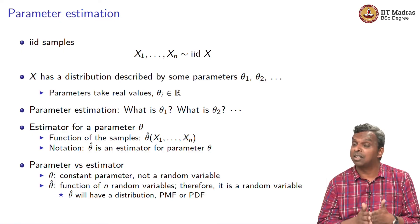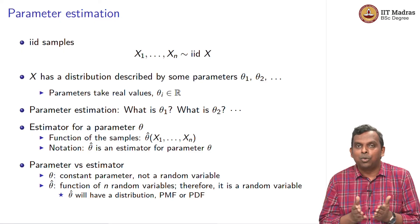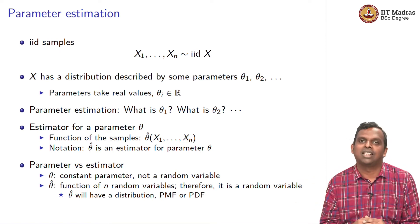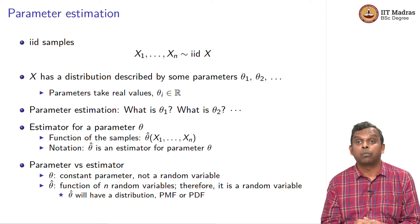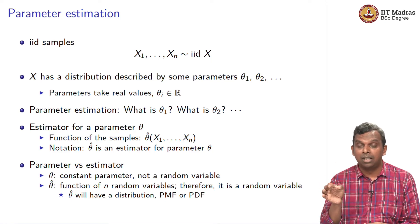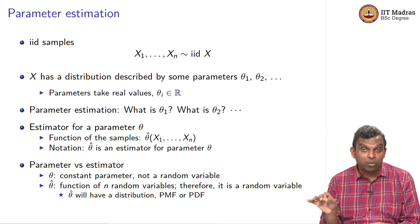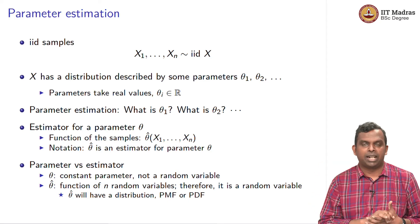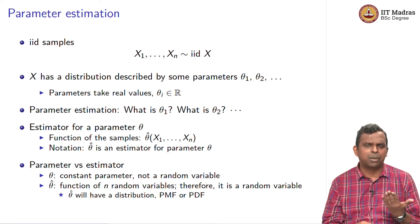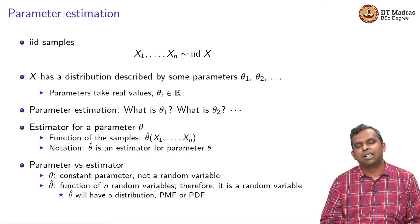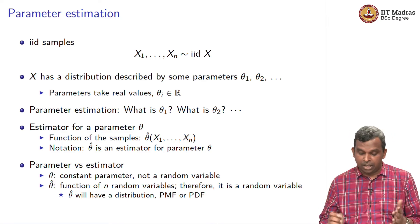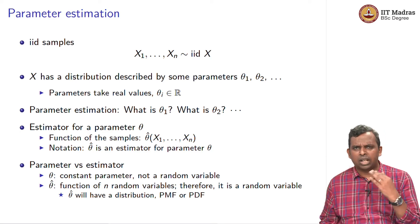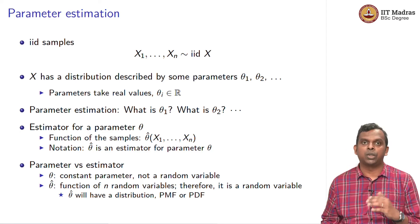That is how estimation works — it is the only thing we can do. We do not know theta ahead of time, so you cannot exactly predict what theta will be. Estimation will only put out a random variable; the estimator is a random variable with a certain distribution, so you can only give those kinds of guarantees. The question is how do you come up with these estimators, how to characterize good estimators, how to design good estimators — we will see that slowly in the rest of the lectures.